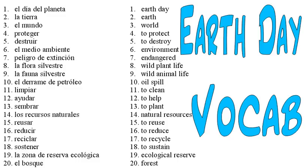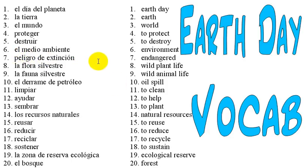So that's 20 words — obviously there are probably thousands of words we could use for Earth Day, but those are the first ones that came to mind. A couple of things to point out: Sembrar is a stem-changing verb where the E changes to IE in the present tense. And number seven, Peligro de Extinción, literally means 'danger of extinction,' hence 'endangered.' Those were the only things I wanted to point out.